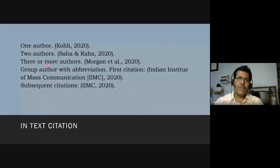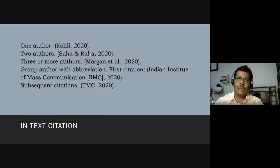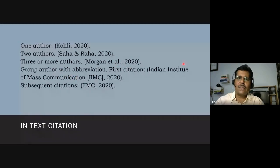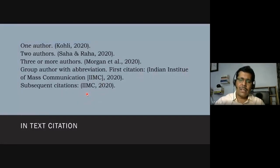For in-text citations: with one author, write the last name and the year of publication. With two authors, write both names. With three or more authors, write the first author's name followed by 'et al.', a period, a comma, and then the year. If the author is a group, spell out the full name with abbreviation on first mention, then use the abbreviation thereafter.